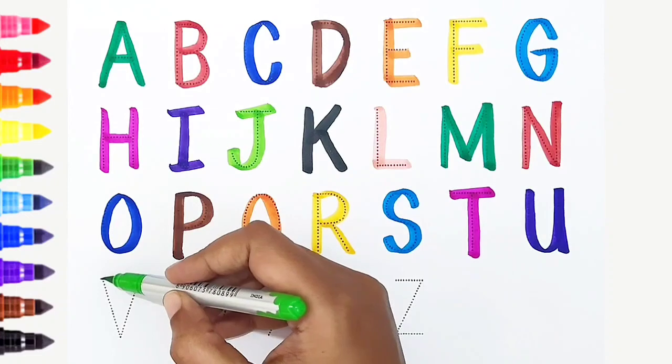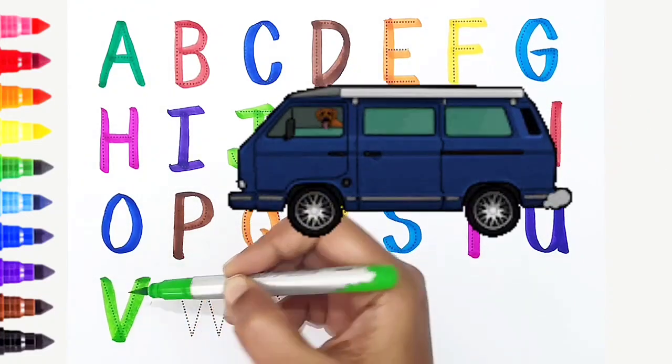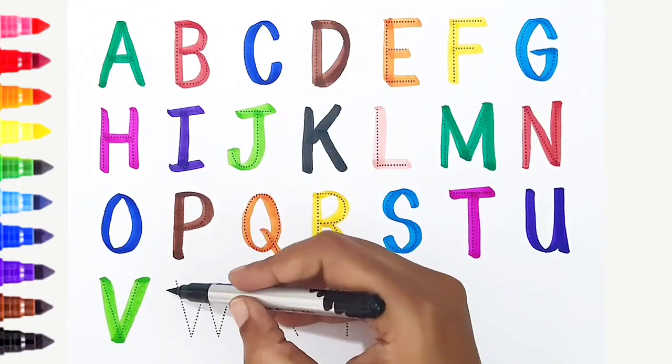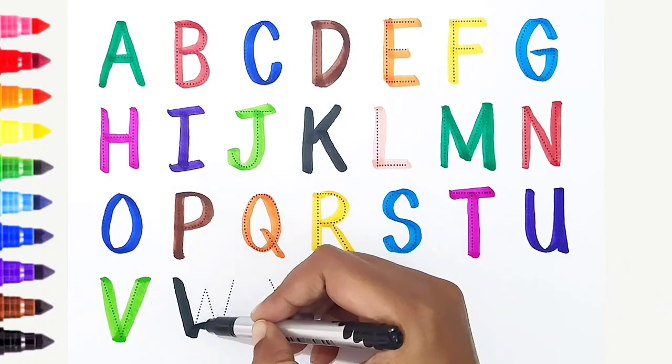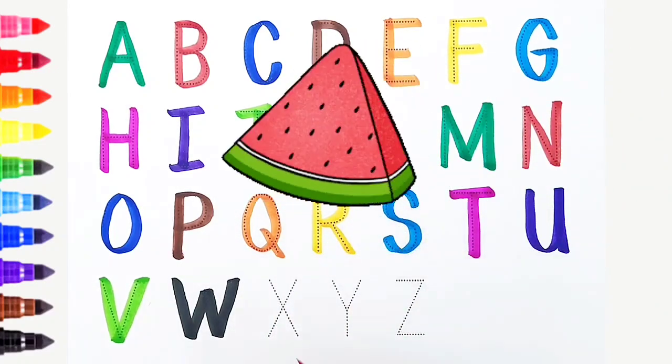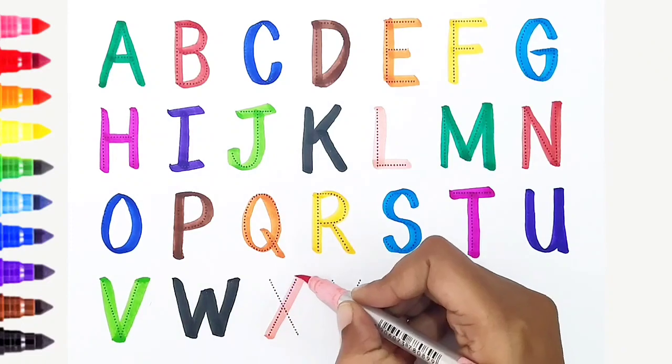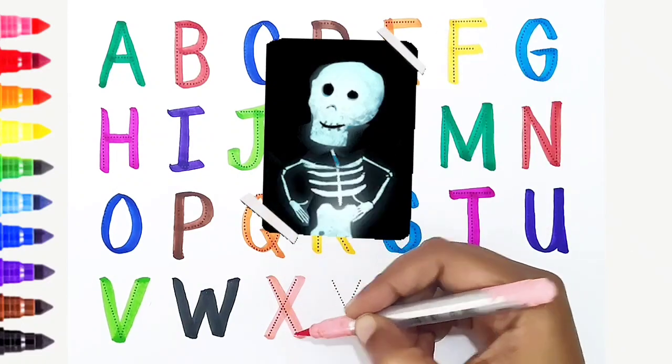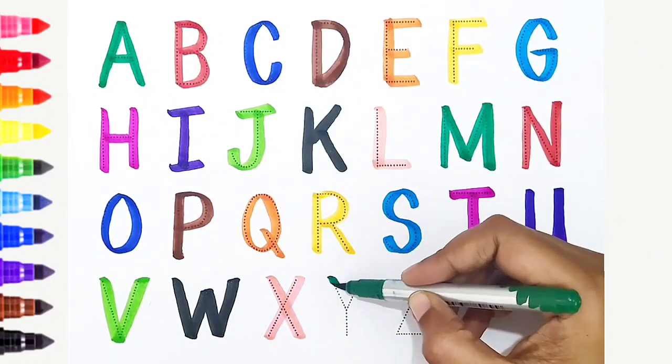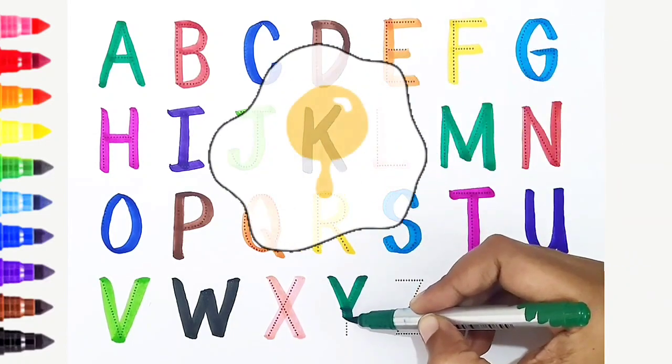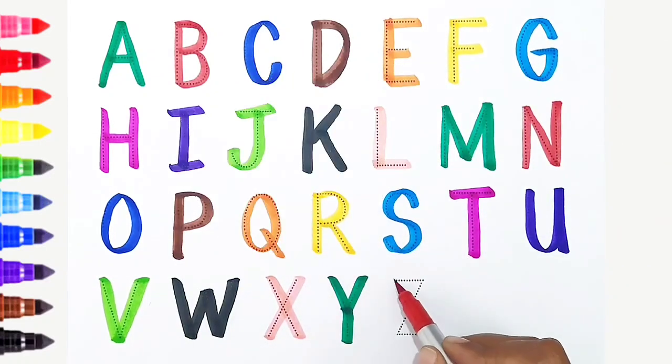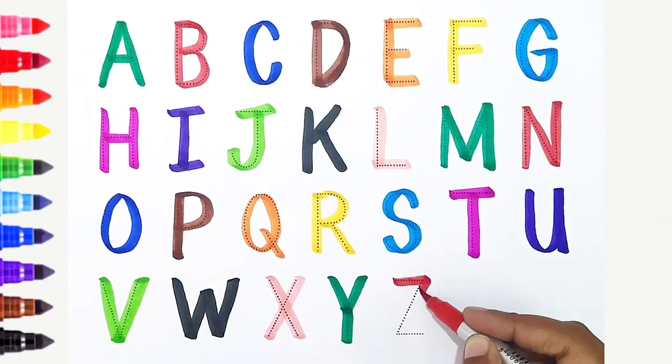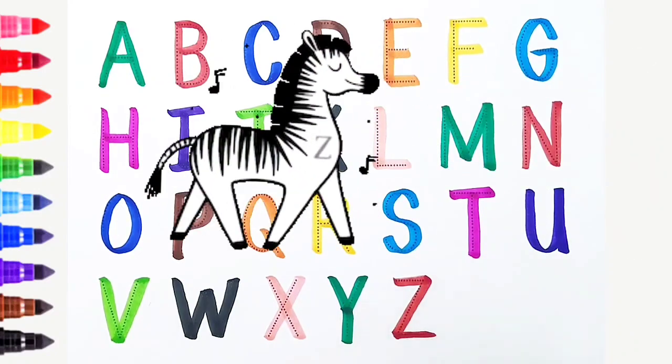V, light green color, V is for van. W, black color, W is for watermelon. X, light pink color, X is for x-ray. Y, dark green color, Y is for yak. Z, red color, Z is for zebra. Once again!